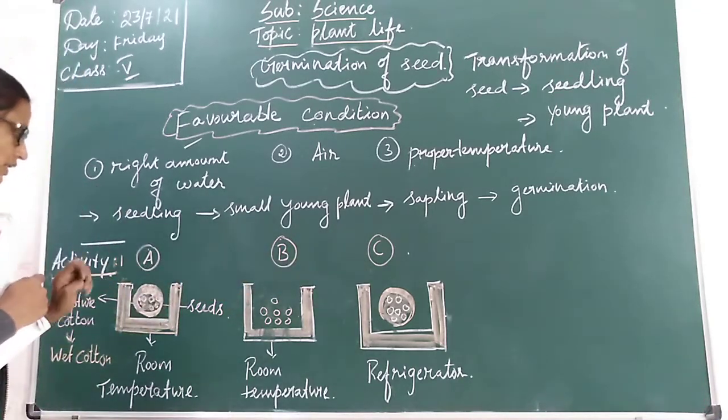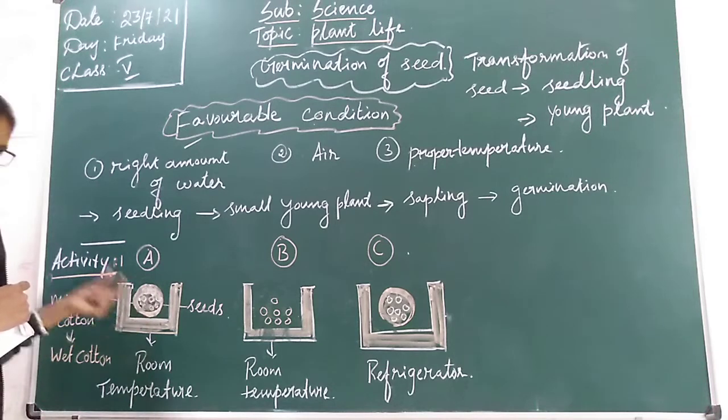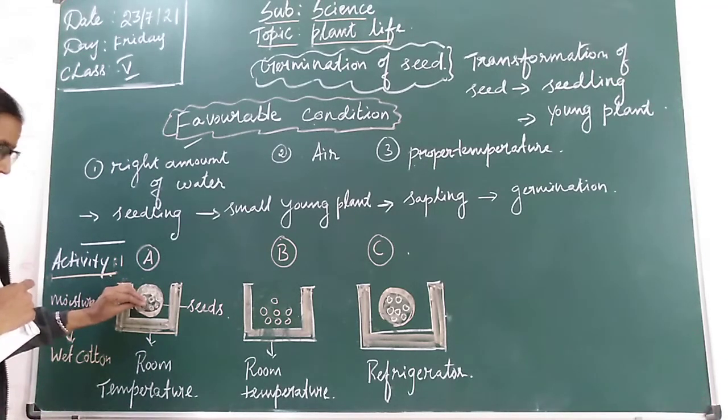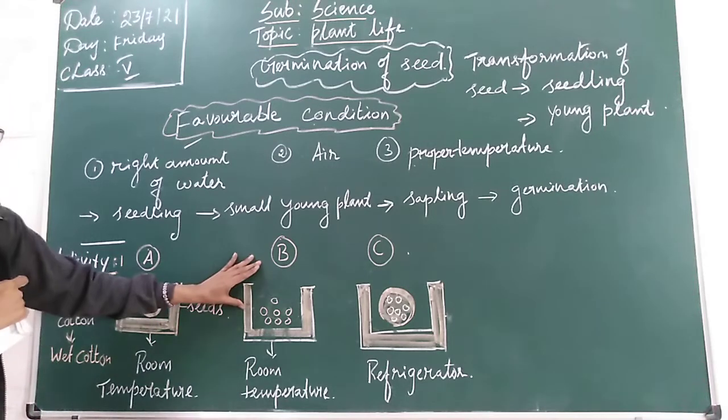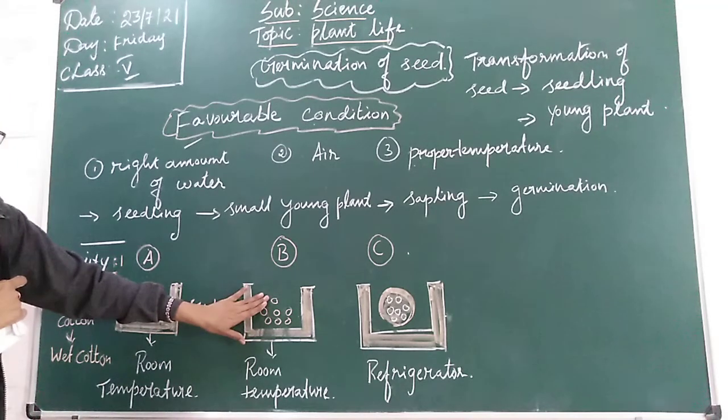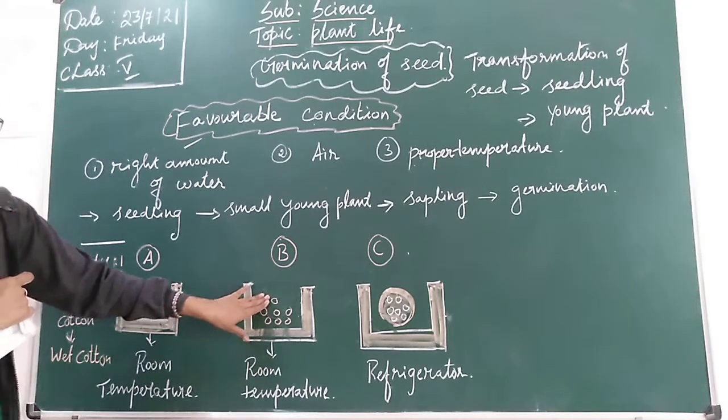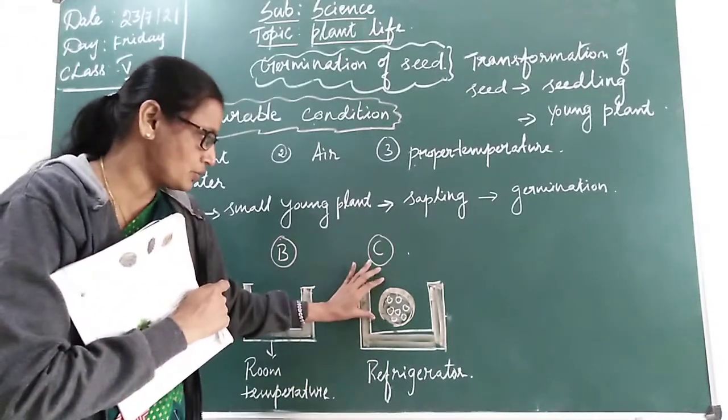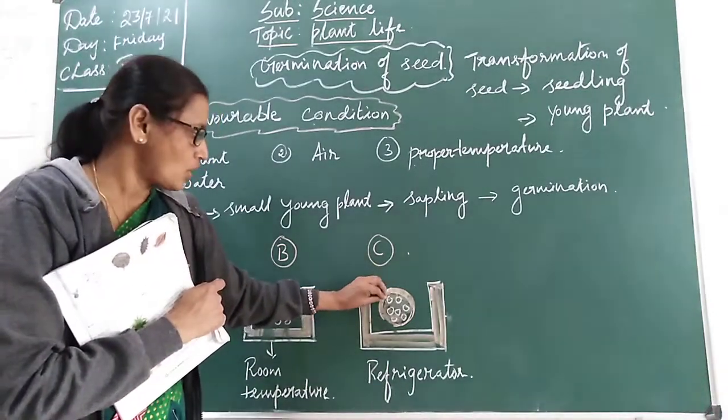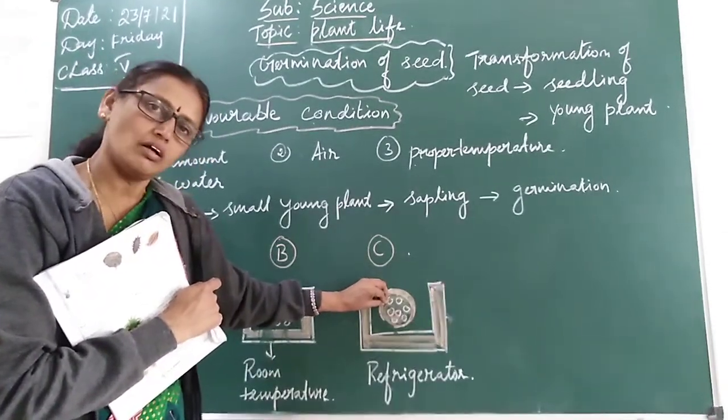In first container you have to put moisture cotton and seeds. In second container you have to keep only seeds. In third container also you have to put moisture cotton with few seeds.